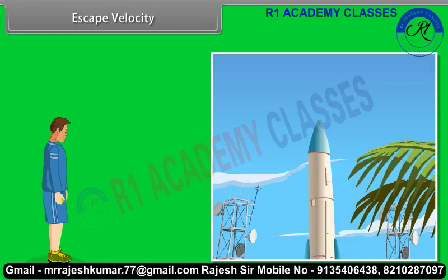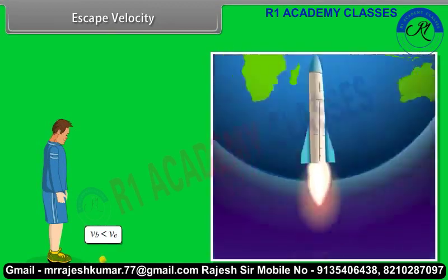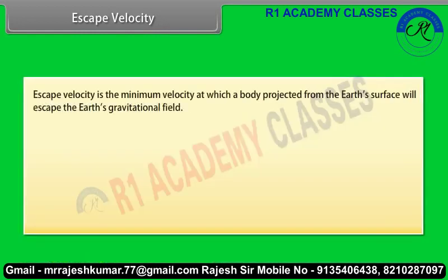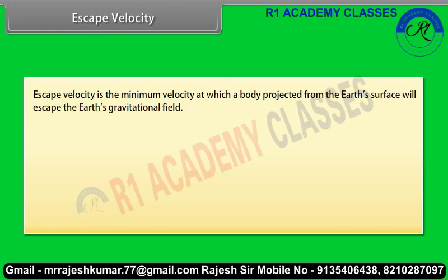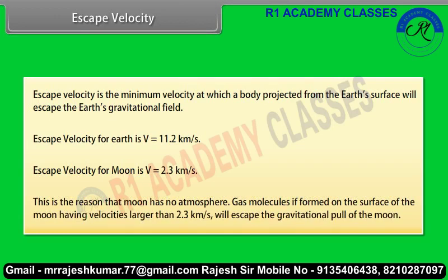Escape velocity. Can we throw an object with such high initial speed that it does not fall back to the earth? Yes. If we throw an object with escape velocity, it does not fall back to the earth. Escape velocity is the minimum velocity at which a body projected from the earth's surface will escape the earth's gravitational field. Escape velocity for earth is 11.2 km/s. Escape velocity for the moon is 2.3 km/s. This is the reason that the moon has no atmosphere — gas molecules with velocities larger than 2.3 km/s escape the gravitational pull of the moon.